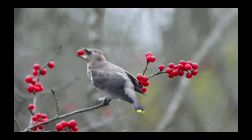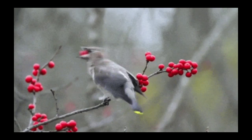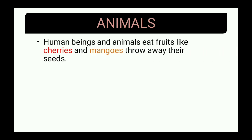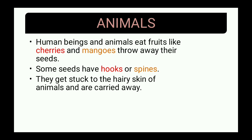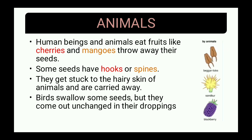Birds, animals, and even human beings play a role in dispersal. We have a habit of eating fruits and throwing them away somewhere — this habit helps the seeds to go away from their parent plants. Animals eat fruits like cherries and mango and throw away their seeds. Sometimes birds swallow seeds, but they come out unchanged in their droppings.